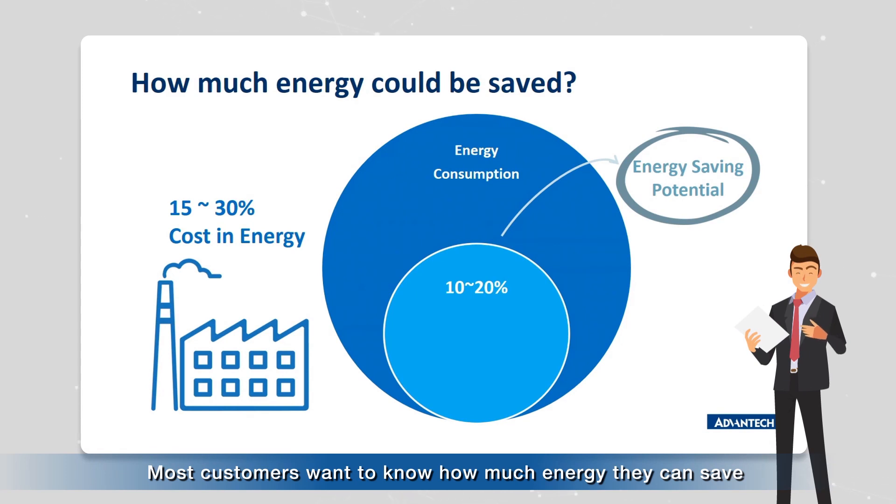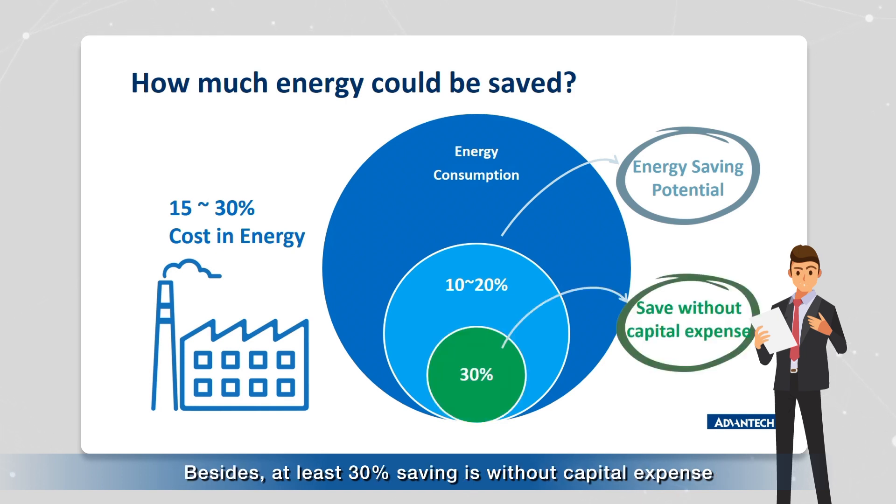Most customers want to know how much energy they can save. Here is a reference number according to the statistics. The average factory can reduce energy by 10 to 20%. Besides, at least 30% savings come without capital expense, just by simply changing procedures and behavior.